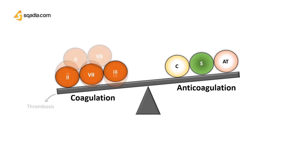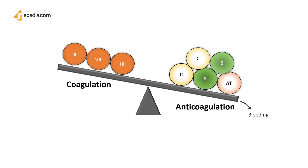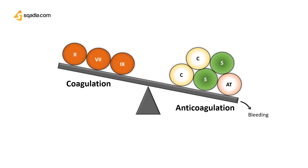If coagulation exceeds its limit, it can cause thrombosis. To counteract this, we administer synthetic anticoagulants. If coagulation decreases, it may lead to bleeding, so you can administer synthetic coagulants to balance anticoagulants.